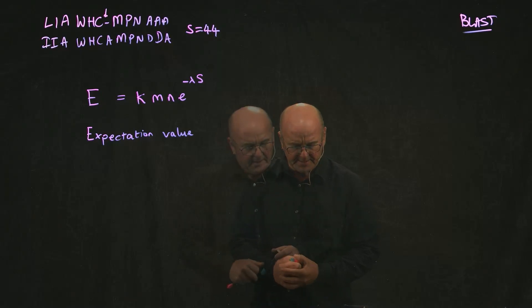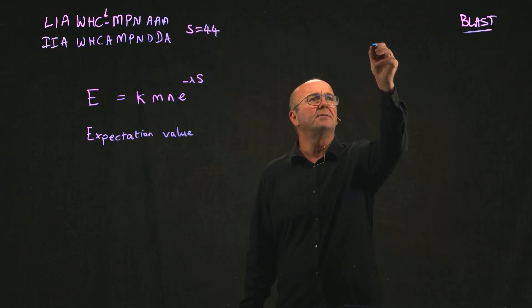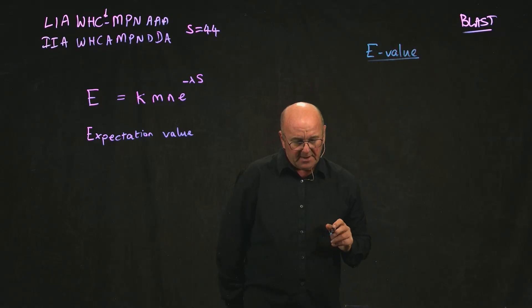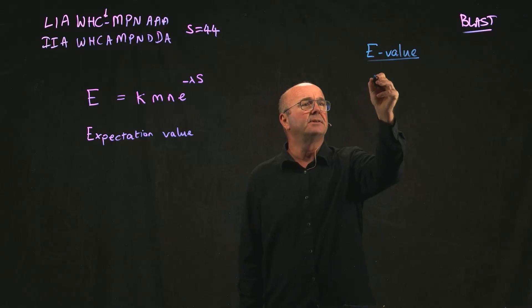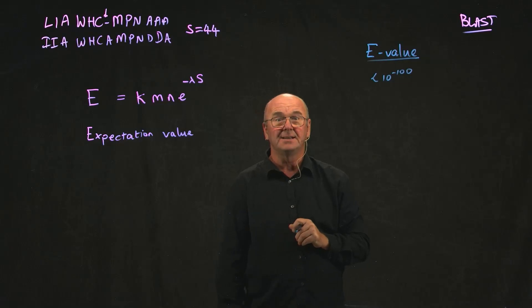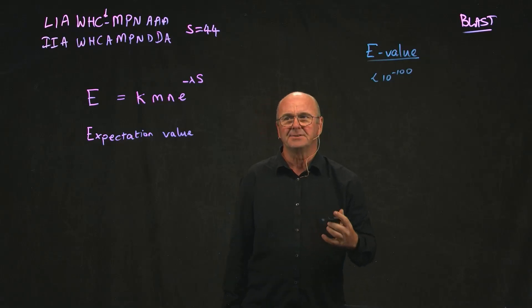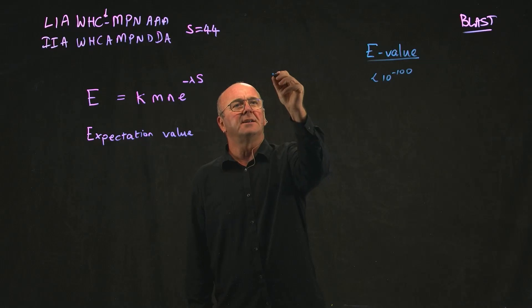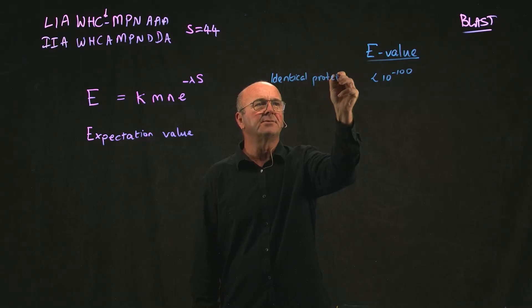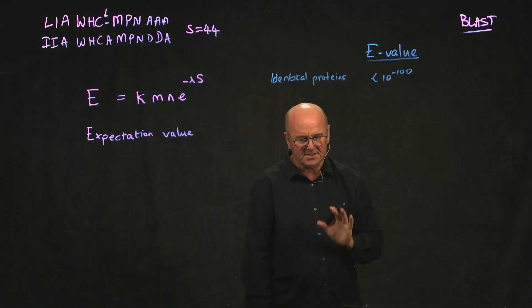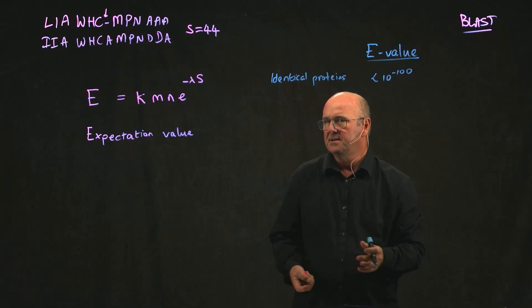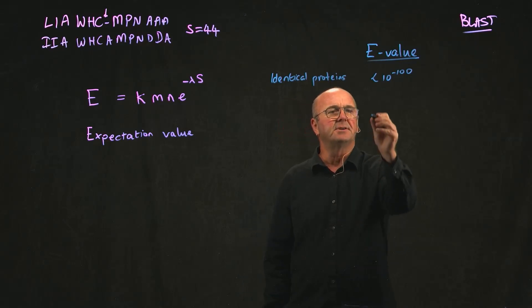The way that e values break down is if you have an e value of less than 10 to the minus 100, so that's like really small, like basically zero, then these are essentially identical proteins. And this is only a rule of thumb. This is not hard and fast. There's no sort of genetic definition here. But it's kind of a rule of thumb that you can use.